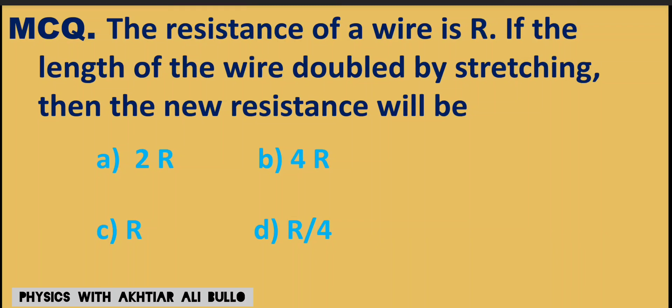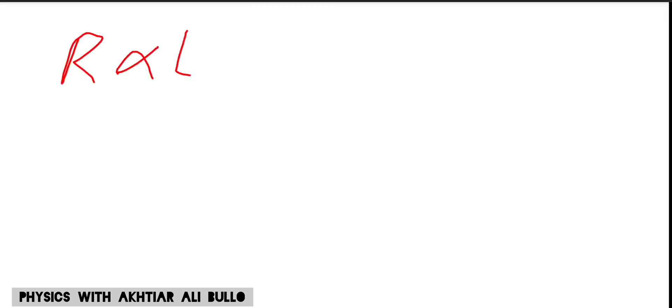The resistance of a wire is R. If the length of the wire is doubled by stretching, then the new resistance will be: A) 2R, B) 4R, C) R, D) R/4. As resistance is directly proportional to the square of the length of the stretched wire,